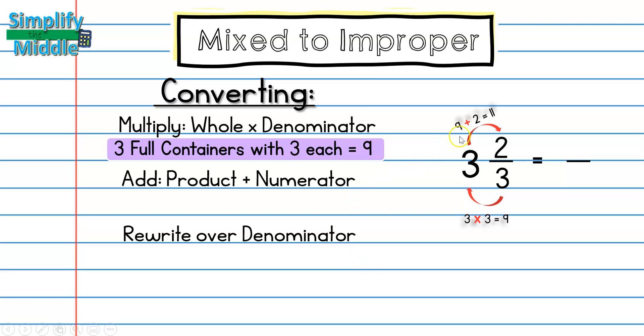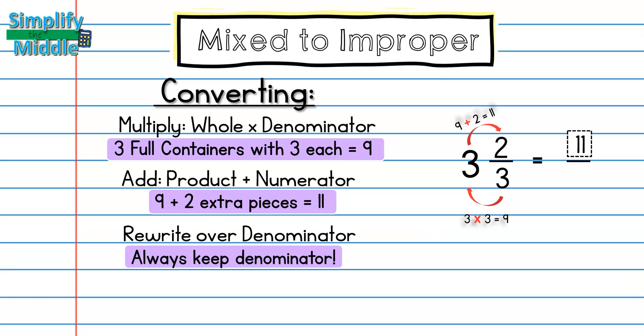So I had nine pieces in my three full containers with two leftovers, so that gave me a total of eleven. And then of course you always rewrite it over the denominator because we always keep the denominator, which is eleven thirds.